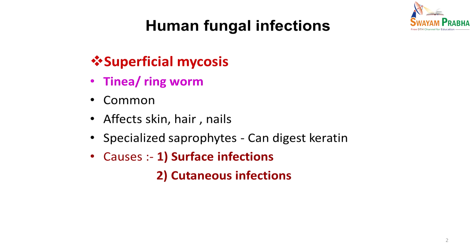Mycosis are diseases caused by fungi. Superficial mycosis mainly comprises tinea and ringworm, which are common infections. They affect skin, hair and nails, and are mostly caused by fungi which are specialized saprophytes — that is, they can digest keratin. Since most organisms cannot digest keratin, they cannot cause infection in intact skin, but these fungi can invade intact skin. They can cause either surface infections or cutaneous infections.